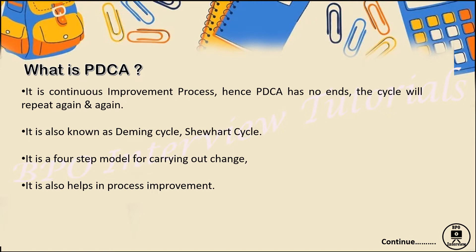We also have a different name for PDCA. The full form is Plan, Do, Check, and Act. It is also known as the Deming cycle and the Shewhart cycle. There are four steps to carry out this process, and it helps us achieve improvements and changes in the process. The main advantage of PDCA is process improvement.